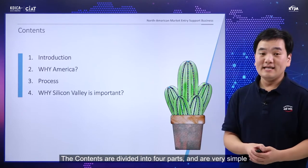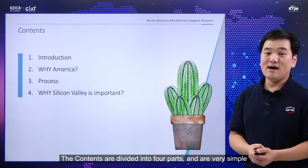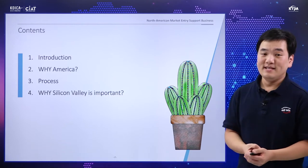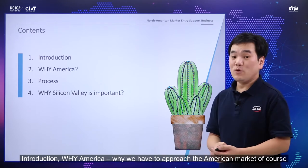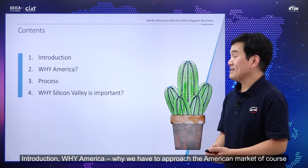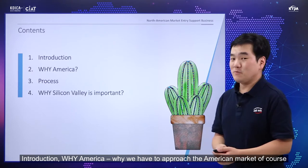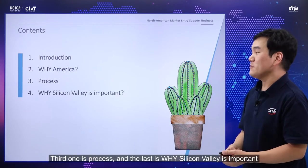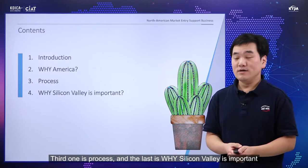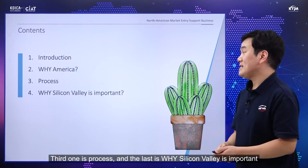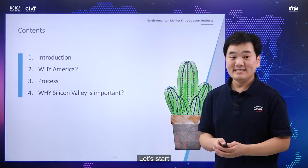These contents are divided into four parts and are also very simple. First is introduction, second is why we have to approach the American market, third is progress and process, and the next one is why Silicon Valley is important. Let's start.